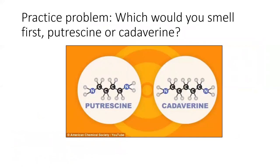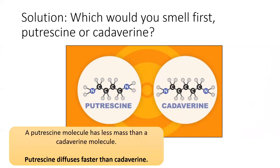Let's apply this concept in a practice problem. Two chemicals created by decaying flesh are the aptly named putrescine and cadaverine. Suppose your chemistry teacher wishes to demonstrate the diffusion of gases by opening a jar of each at the front of the classroom. Which would you smell first? By looking at their molecular formulas, cadaverine is heavier by one carbon and two hydrogens, so the average speed of cadaverine is slower than putrescine. Putrescine would diffuse faster, reaching your poor nostrils quicker than cadaverine.